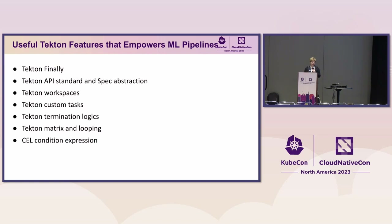With machine learning we have a lot of parameters, so having different matrix parameters and being able to loop over them is very helpful. With the newer Tekton release, it introduced a new Common Expression Language for conditions, so now you're not only able to do string matching for conditions, but you also have CEL to evaluate conditions on the fly. That's very helpful.